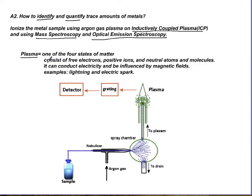It will have free electrons, positive ions, neutral atoms or molecules. It can conduct electricity and it can be influenced by magnetic field. The examples that you should know from daily life is lightning or electric spark. Those are examples of plasma.